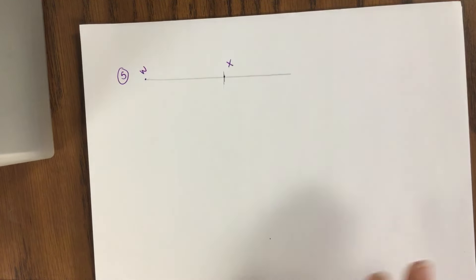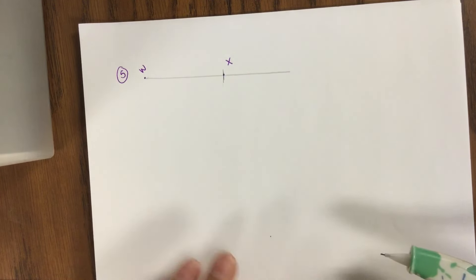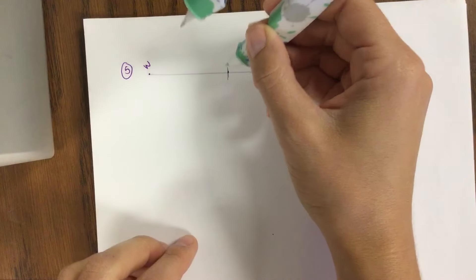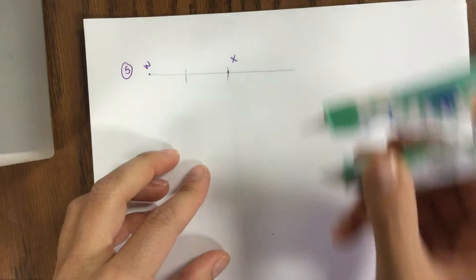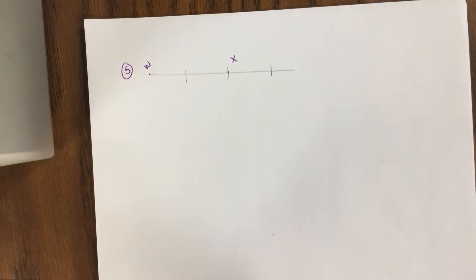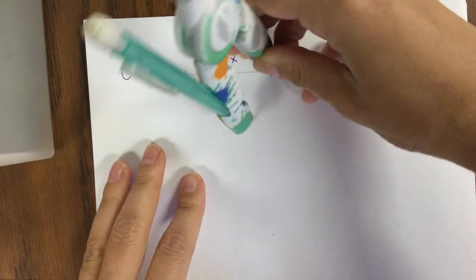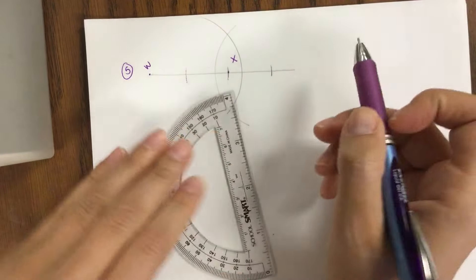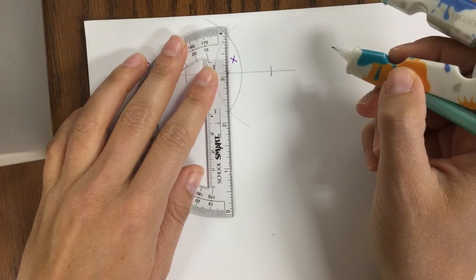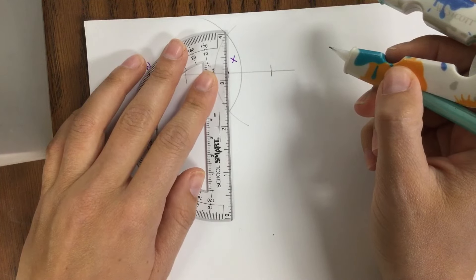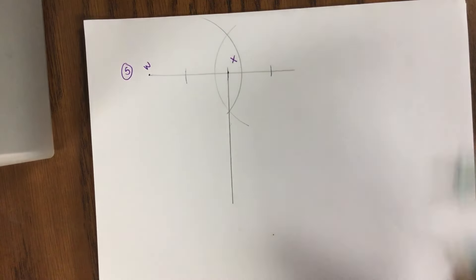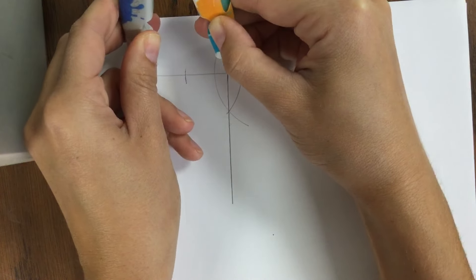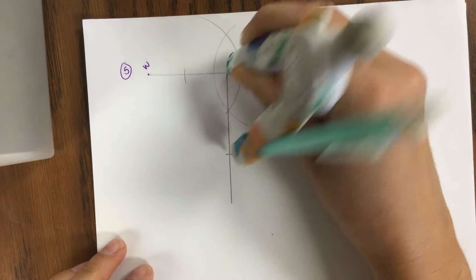A square has all equal sides and right angles at the corners, so I want a 90-degree angle at X. I need to create the bisector of a segment where X is the midpoint. To make X the midpoint, I go the same spacing to the right and the same spacing to the left, then bisect the segment I just created. Whenever we construct 90 degrees, I should always see these arcs. X is my corner so I line up all three points and draw through — there's my 90-degree corner. Now I measure out the length from W to X and transfer it down, and that's the next corner Y.